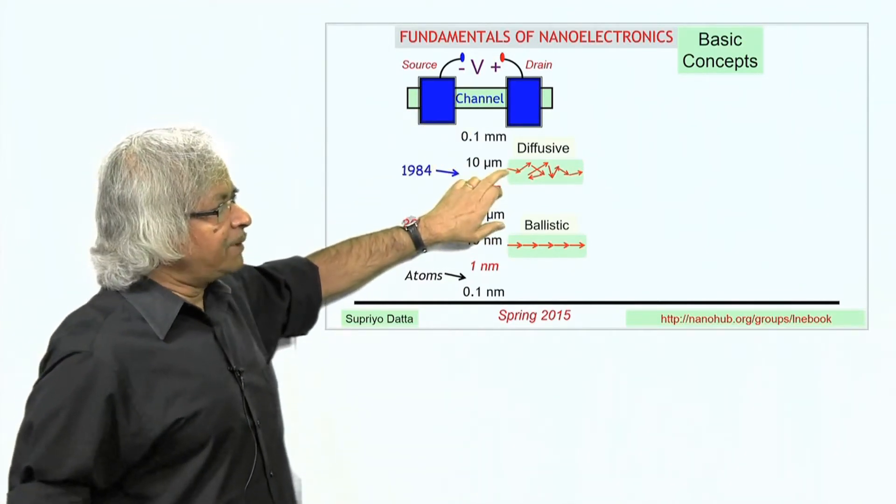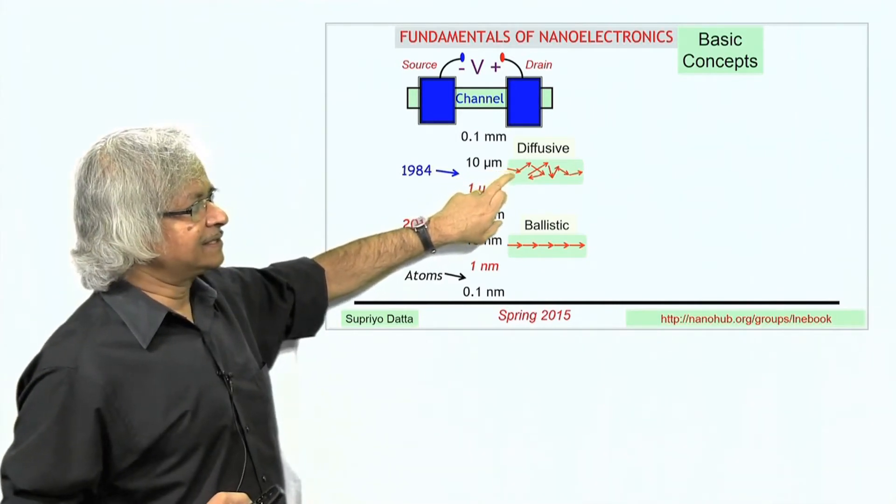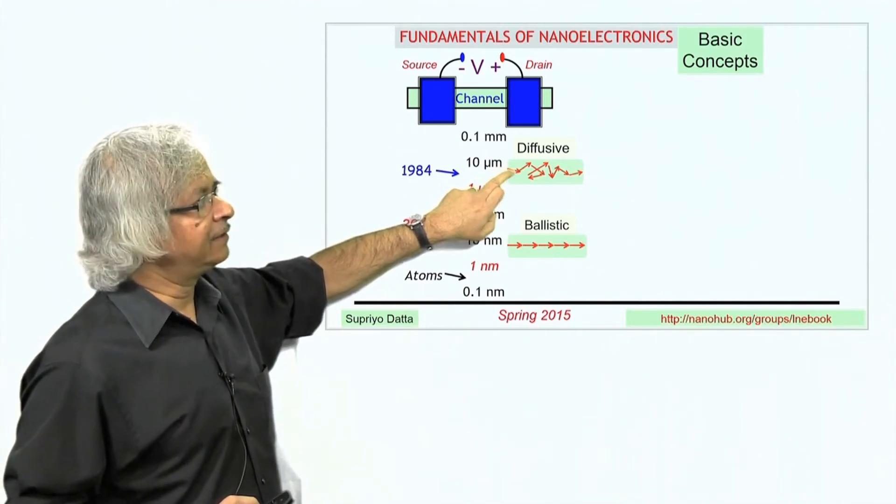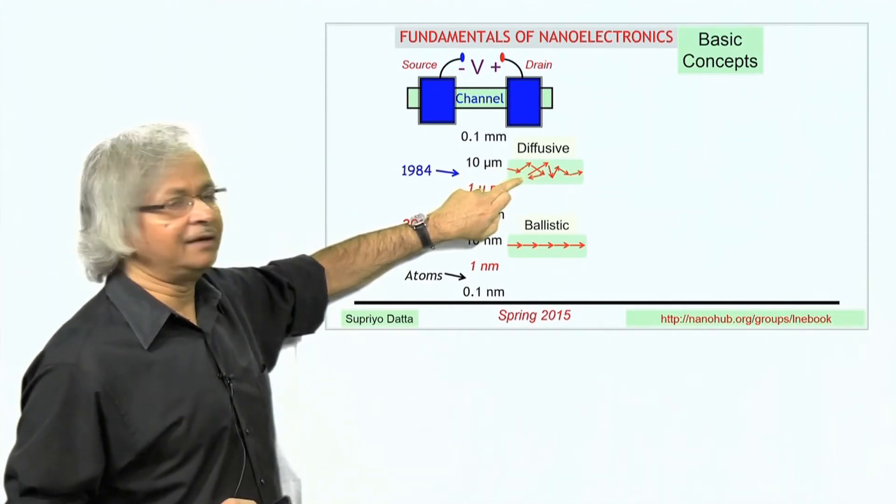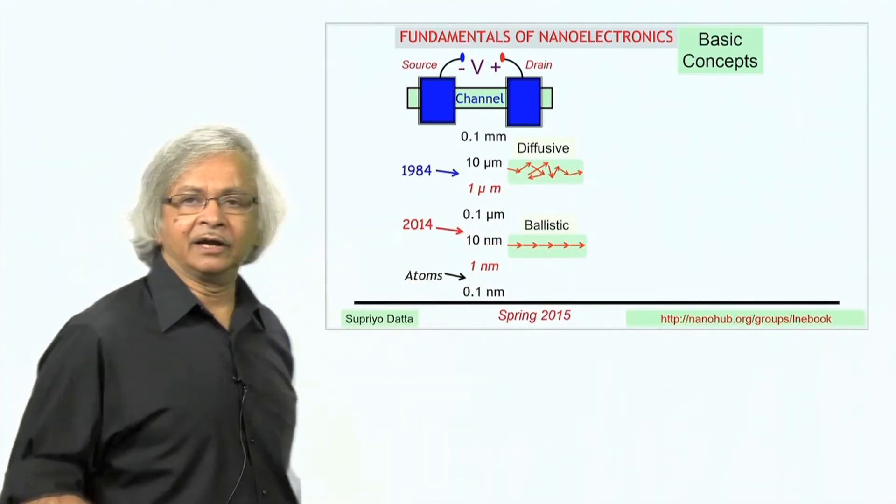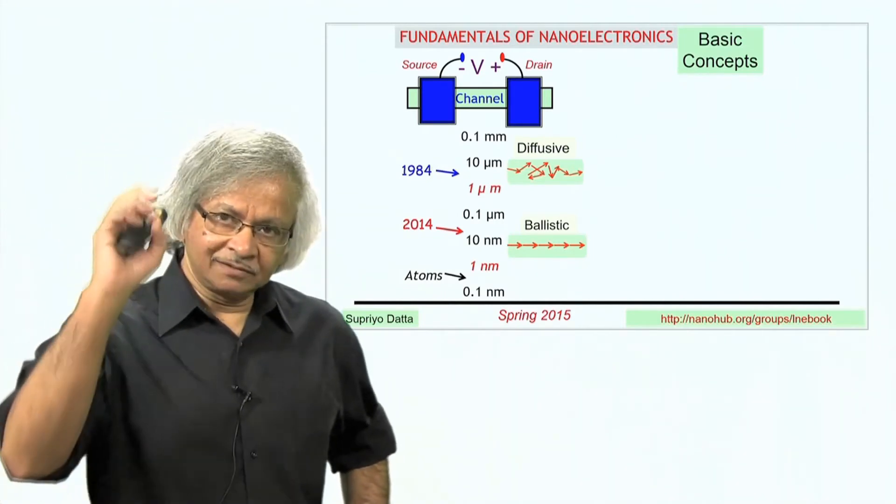So the picture we usually carry in our head of how electrons go through a device is like a random walk. That is, it starts out at one end, hits something, turns around, hits something else, turns around again, and so on. But today's devices are down to a point where a better paradigm is ballistic transport. That's like a bullet.